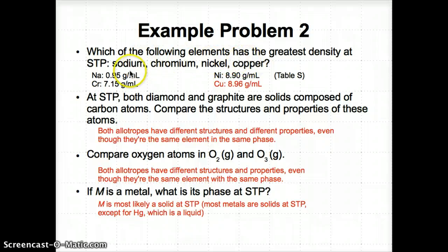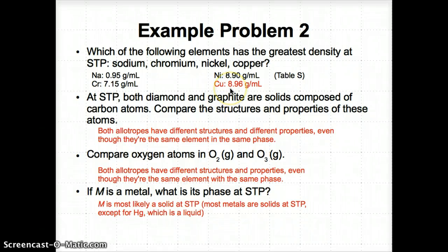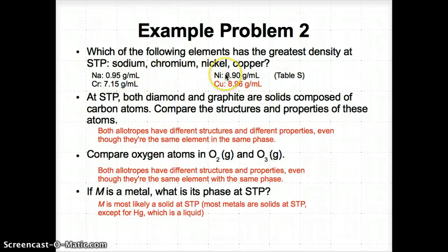Example problem two. For question one, look up the densities of sodium, chromium, nickel, and copper in Table S to find which has the highest density. You'll find that Cu (copper) has the highest density at 8.96 g/mL, which is higher than all three of the other elements.